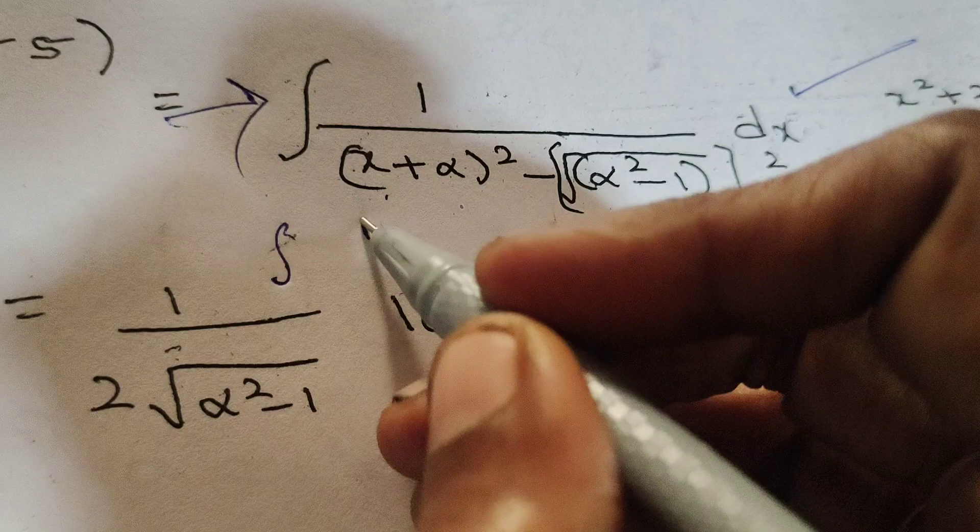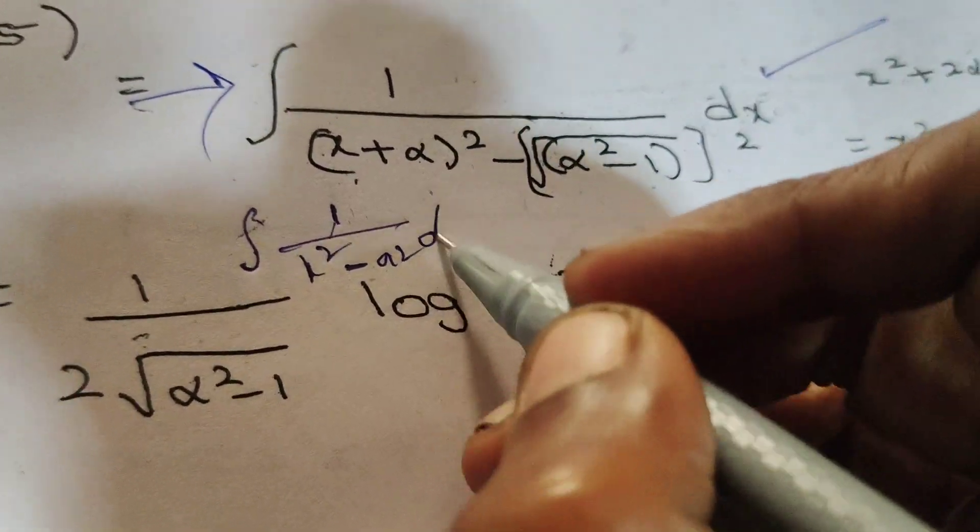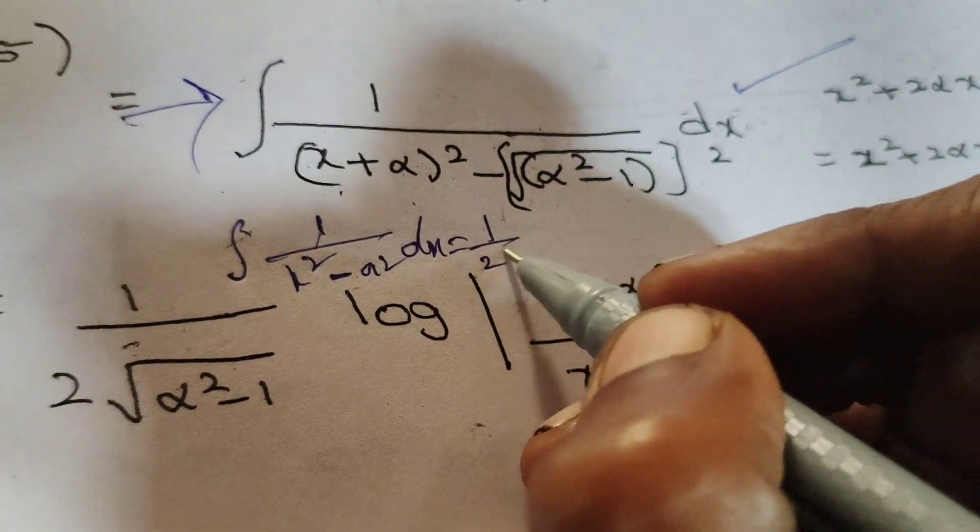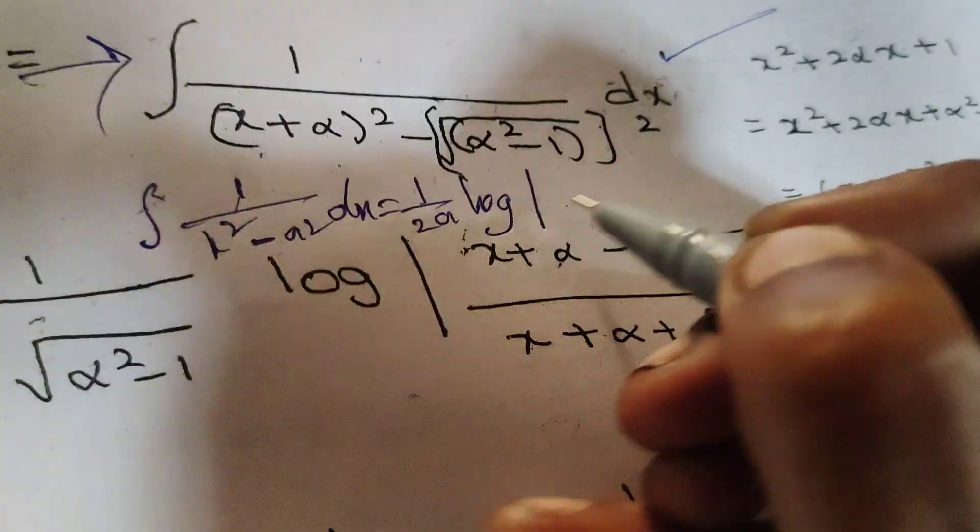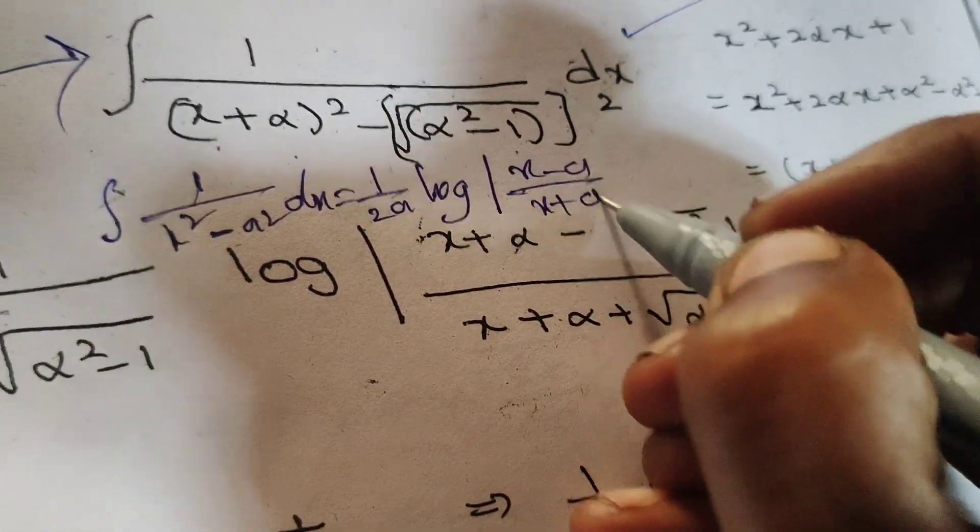Here we know that the formula: integral of 1 by (x square minus a square) dx equals to 1 by 2a log of modulus (x minus a) by (x plus a) plus c.